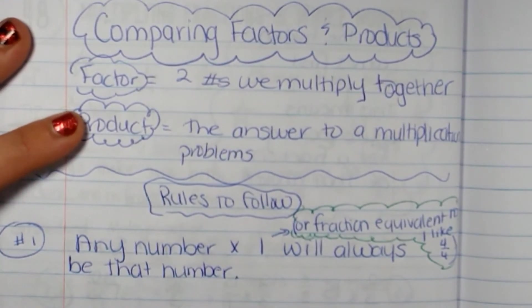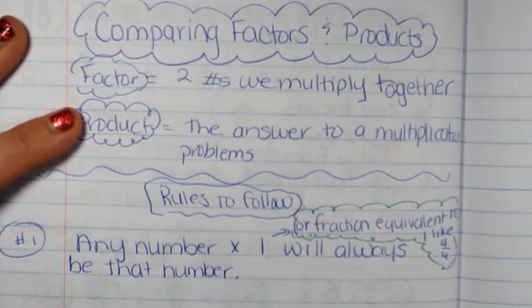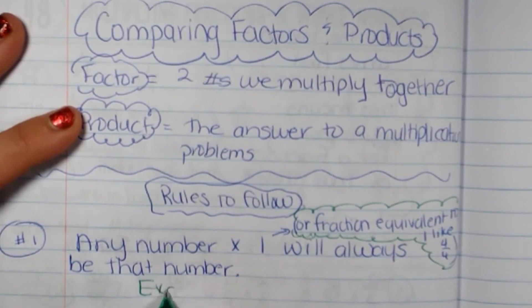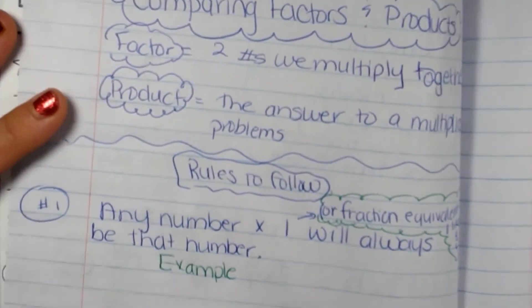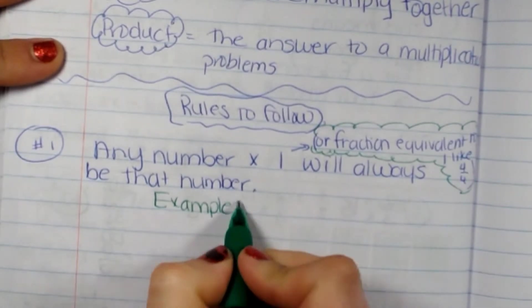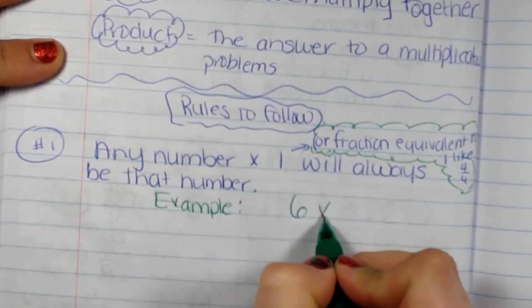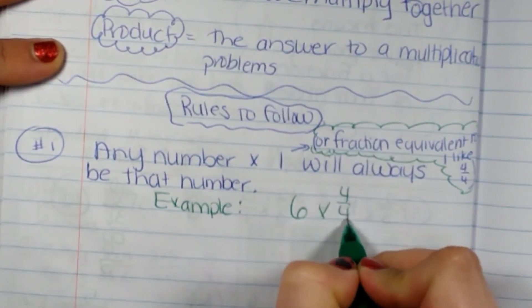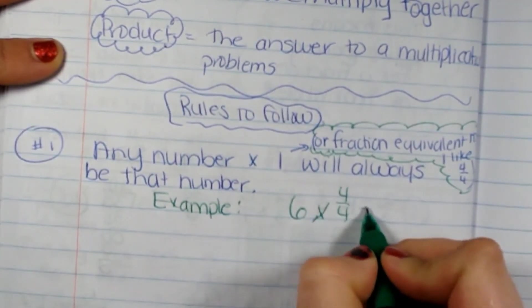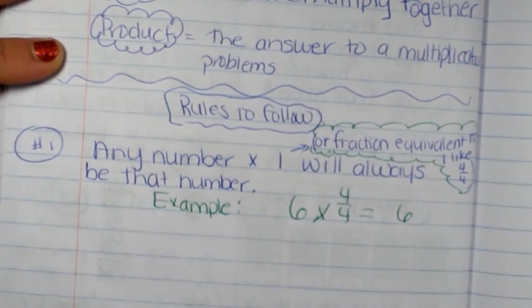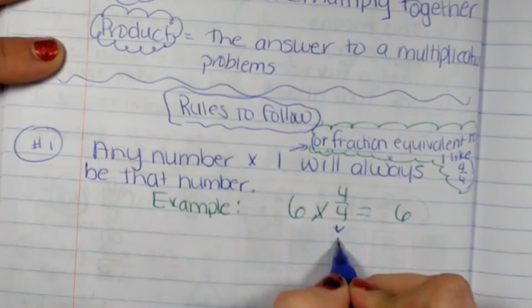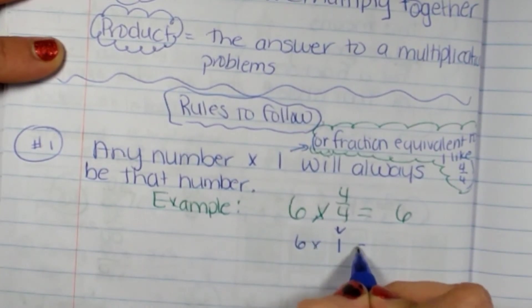So for example, we'll go down here and do this one. Six times four-fourths will always equal six because four-fourths is one, and six times one is six.